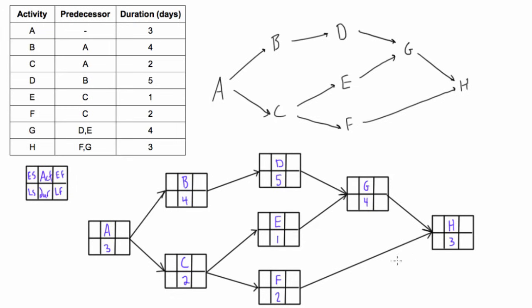Now we want to complete our forward pass to find the early start and early finish, and then once we have that we'll do our backward pass to find the late finishes and late starts. Starting with activity A — we start at zero. Activity A's duration is three days, so zero plus three gives early finish of three. We bring that three forward as the early start of B and C, since they can't start until A is done. Three plus four is seven, and three plus two is five.